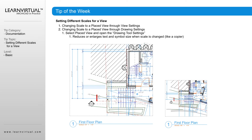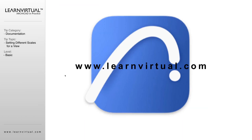When you do this, it reduces or enlarges the text and symbol size when the scale is changed. So here we have the saved floor plan view at a quarter inch, and then we changed the drawing scale only down to an eighth of an inch. As you see, the text gets a little bit harder to read.